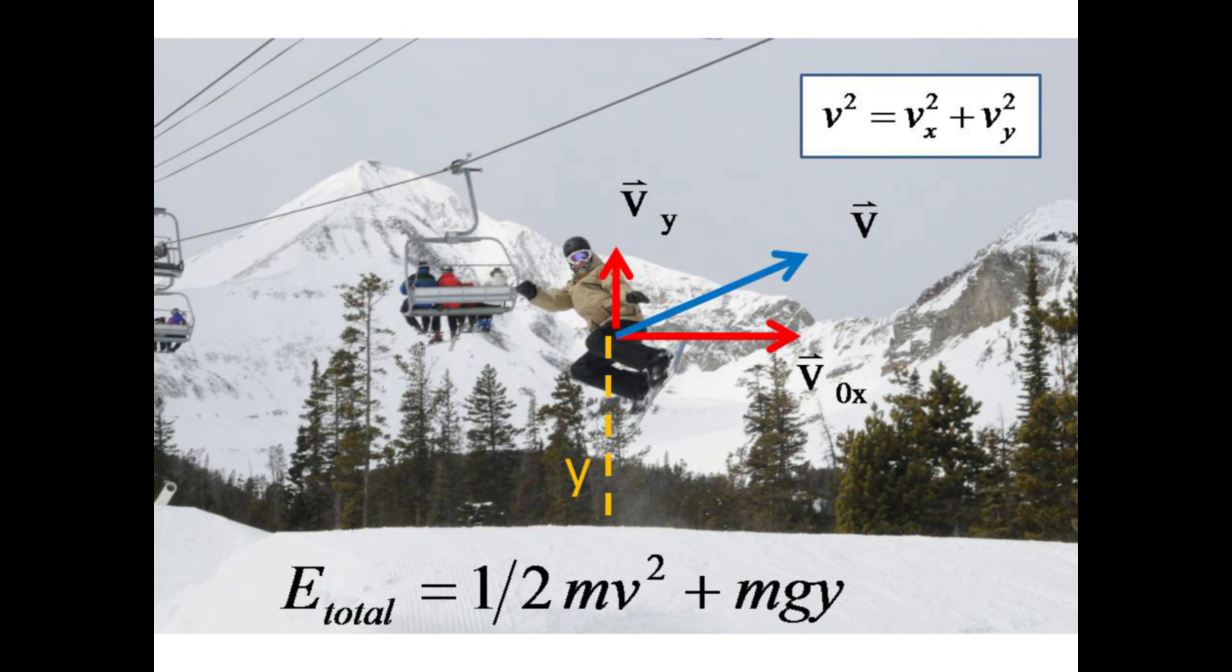Partway through his jump, he has a combination of kinetic energy, one-half mv squared, and potential energy, mgy. By the Pythagorean theorem, v squared equals vx squared plus vy squared. Although the x component of velocity remains fixed, since there is no horizontal force, the y component is reduced by the downward acceleration due to gravity.